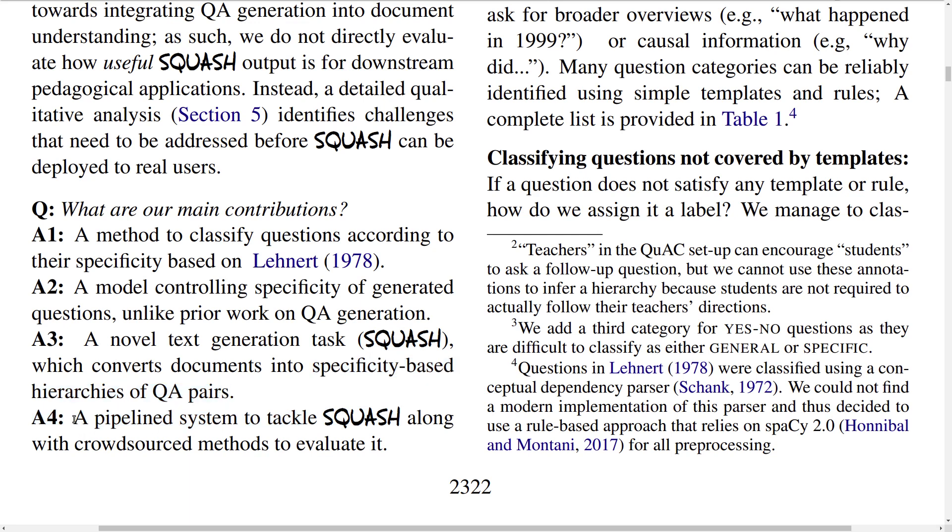And finally they have a whole pipeline system which can generate these SQUASH hierarchies and they also do a human evaluation of this system using crowdsourcing.